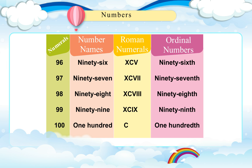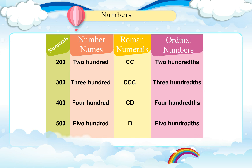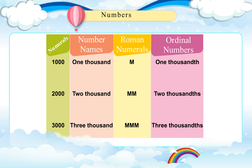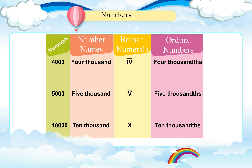80, 90, 99, 100, 200, 300, 400, 500, 600, 700, 800, 900, 1000, 2000, 3000, 4000.